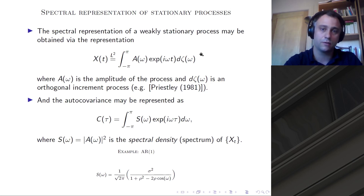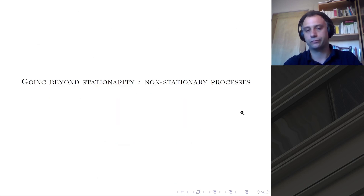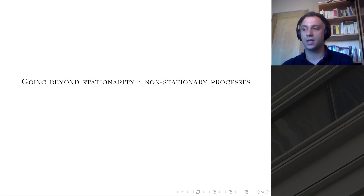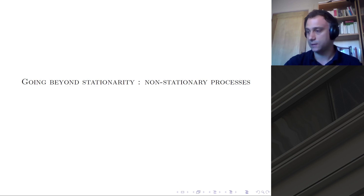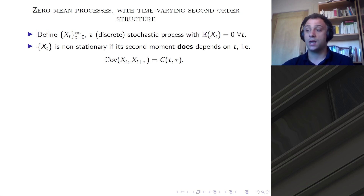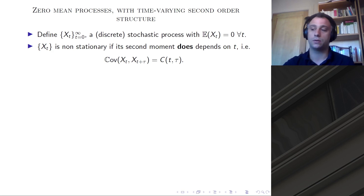So you lose the fact that this representation implies a representation of this form. We need to provide new statistical tools specifically designed to tackle the non-stationarity of the process, in particular when we want to do spectral analysis. This is what we do in our research. We define a non-stationary zero-mean process as one whose second-order structure does depend on time, and the Fourier representation of those processes does not provide a Fourier representation of the second moment.